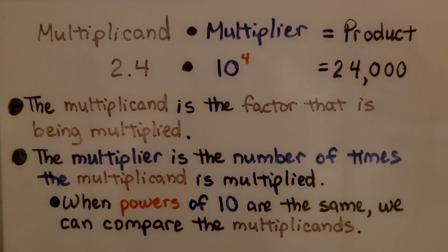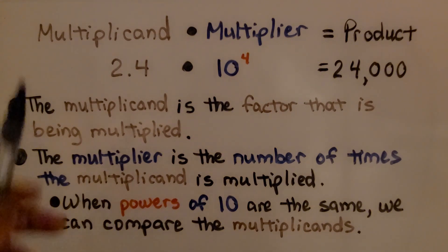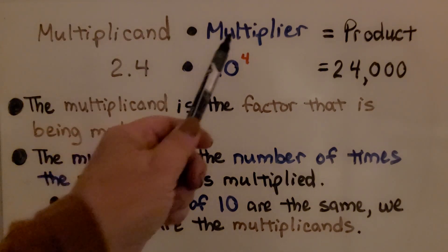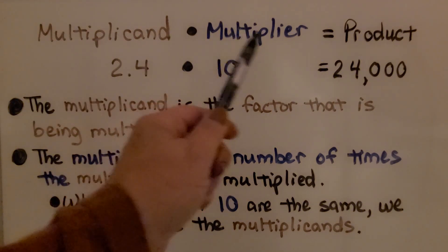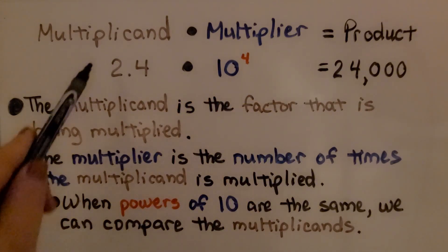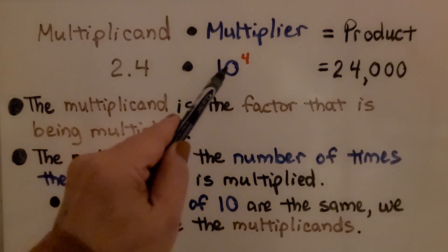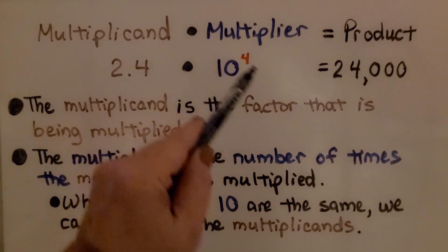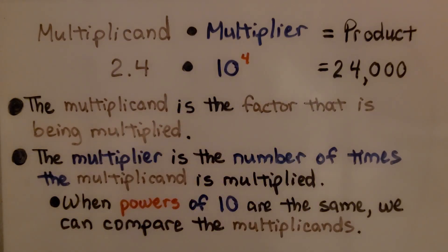The multiplicand is the first number, and the multiplier is the second number, and together they equal the product. For example, 2 and 4 tenths times 10 raised to the fourth power equals 24,000. The multiplicand is the factor that is being multiplied; the multiplier is the number of times the multiplicand is multiplied.